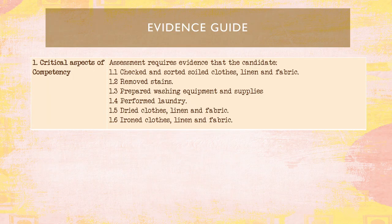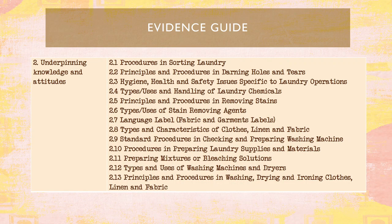The evidence guide: assessment requires evidence that the candidate must check and sort soiled clothes, linen, and fabric; remove stains; prepare washing equipment and supplies; perform laundry; dry clothes and linen and fabric; iron clothes and fabric. In short, you should know how to do laundry and properly arrange the clothes, linen, or fabric after washing. The underpinning knowledge and skills include the different knowledge required to perform this competency.